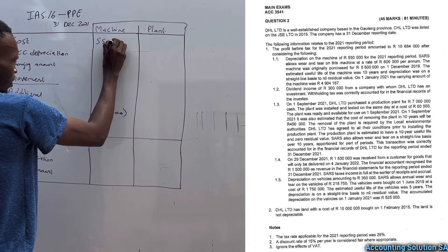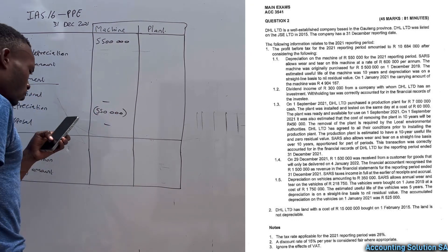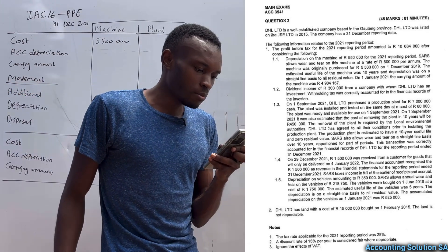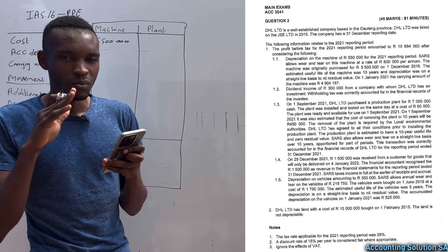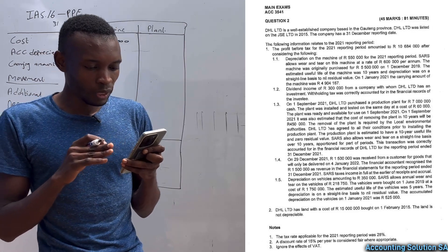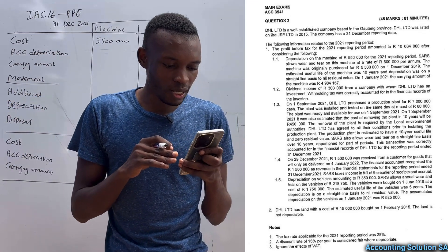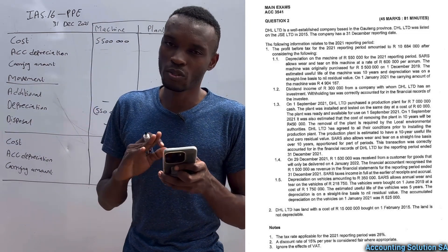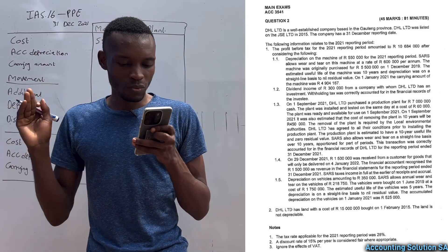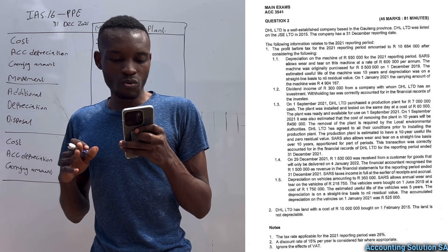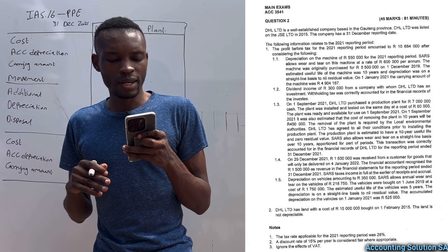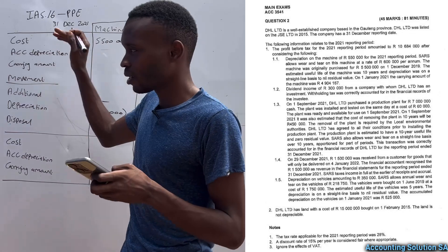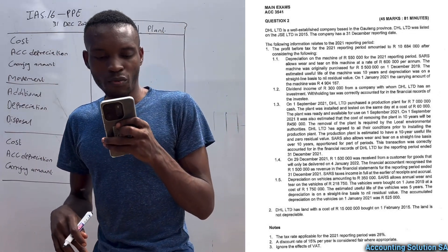The machine was purchased for 5,500,000 — that is our cost price. The estimated useful life of this machine is 10 years, and depreciation is on a straight-line basis to nil residual value, meaning we don't subtract any residual value when we calculate depreciation.